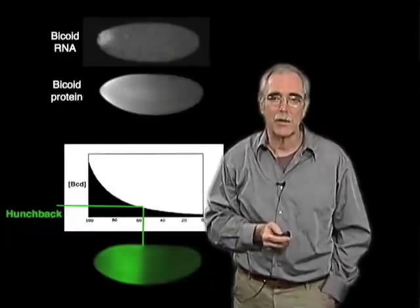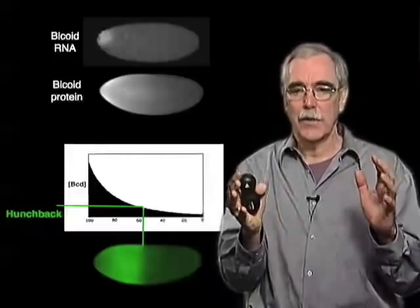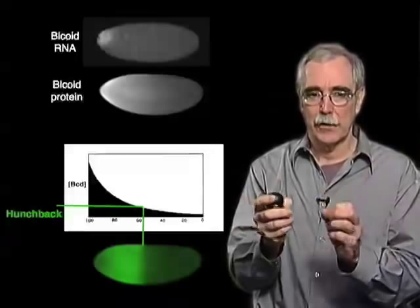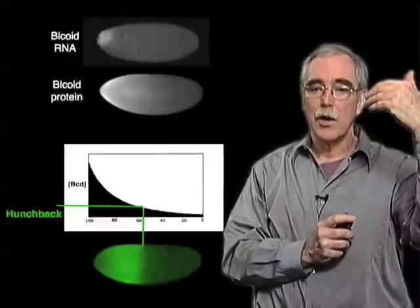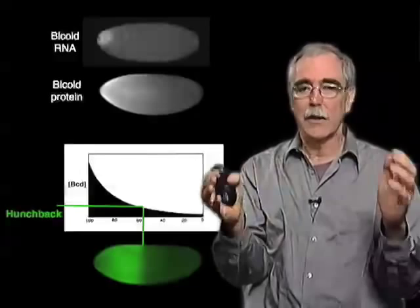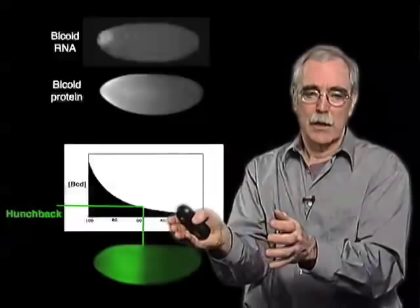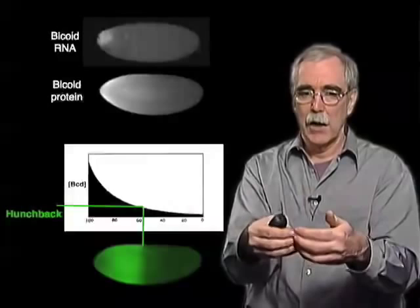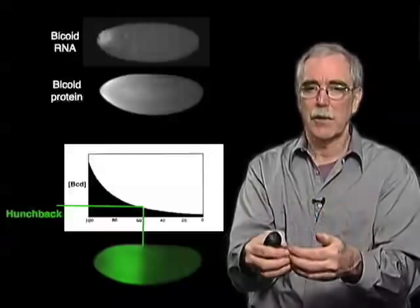What Thomas in particular was interested in was this simple cartoon sense of how an information gradient like bicoid arises: you have a localized RNA, synthesis, and then movement of the protein. Most of our knowledge — and all the pictures you see — were made in fixed embryos, where you fix an embryo, stain it with something that allows you to see particular proteins like bicoid, or do in-situ hybridizations to identify the localization of the RNA.